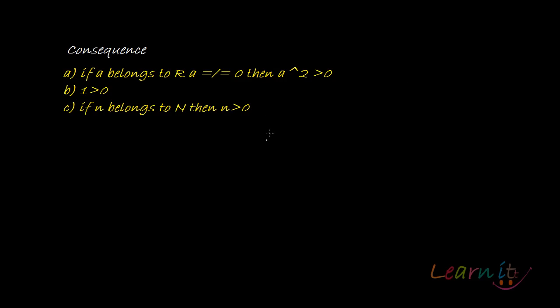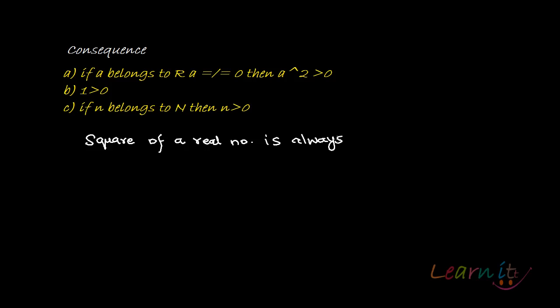The consequence of algebraic compatibility and compatibility between algebraic structure and order structure of R leads us to say that for any real number a, where a belongs to R and a is not equal to zero, the square of a will always be positive. The square of a real number is always positive.